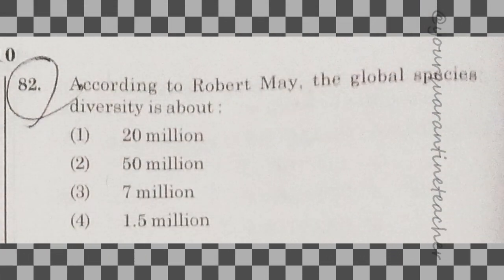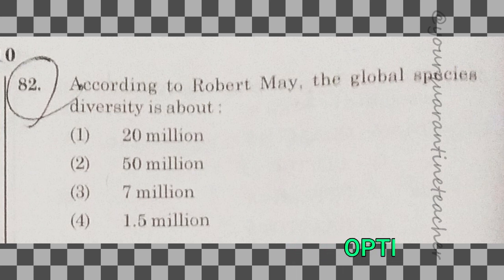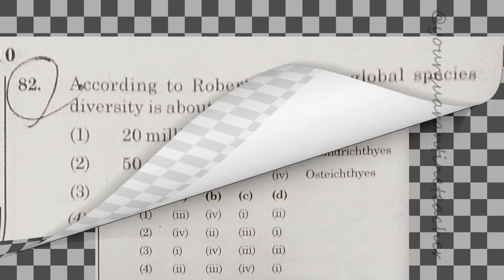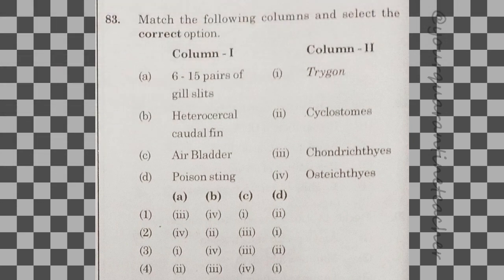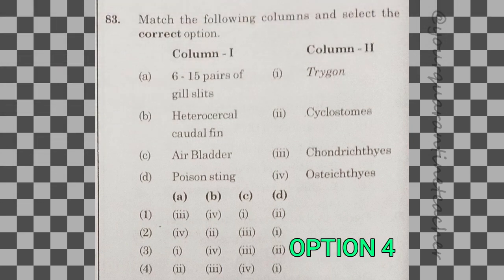82nd question: according to Robert May, the global species diversity is about — option 3 — 7 million. That is the right answer. 83rd question: match the following. Option 4 is the correct answer.